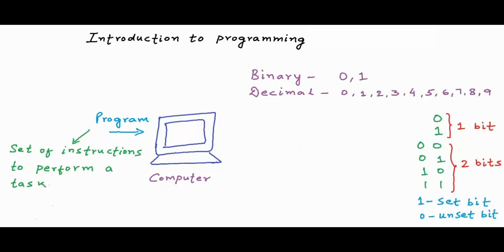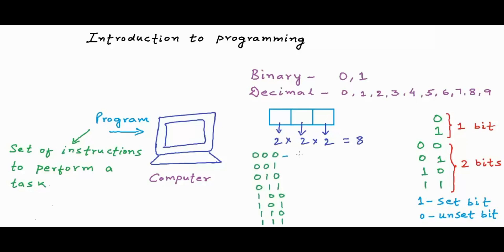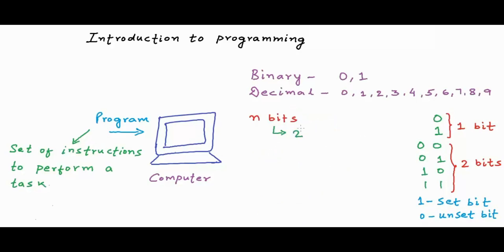If we have three bits — each cell drawn in this figure is a bit position — then at each position we have two choices: we can either have a 0 or a 1. Corresponding to these choices, we will have two choices for the next position, and corresponding to a combination of these two positions, we will have two choices for the next position. So if we have three bits, we can have eight possible binary values. In decimal, this is 0, this is 1, this is 2, and so on. In general, if we have n bits, we can have 2 to the power n possible permutations and combinations of 0s and 1s.